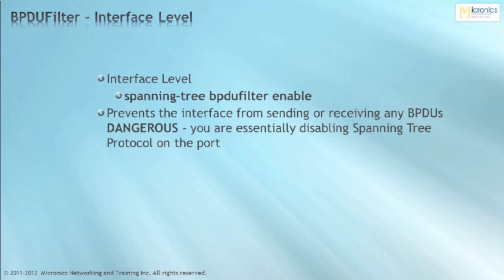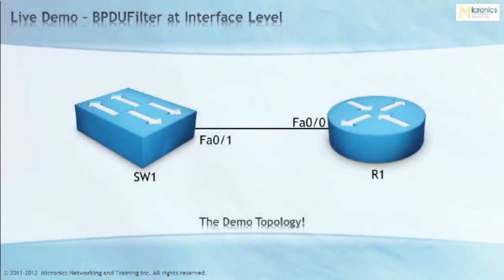The command is simple: spanning-tree BPDU filter enable. This prevents the interface from sending or receiving BPDUs. Since we're preventing the interface from receiving BPDUs, we're essentially disabling Spanning Tree Protocol on that port — which is quite dangerous. To explore this feature, we don't need a complex topology; just a simple switch and a simple router. We'll utilize a bridge group on the router to send BPDUs at the switch. Let's get to the command line.